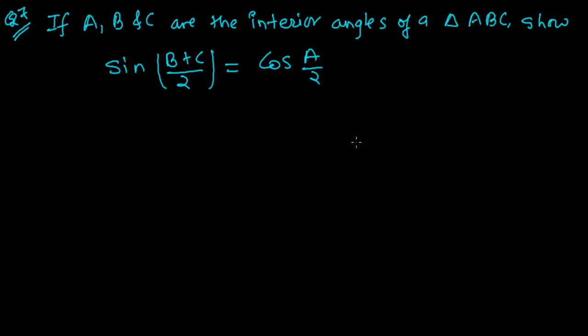Hi friends! Here is another problem of Trigonometric Ratios of Complementary Angles. It is saying that if A, B and C are the interior angles of a triangle ABC, so that sin of (B+C)/2 equals cos A/2.